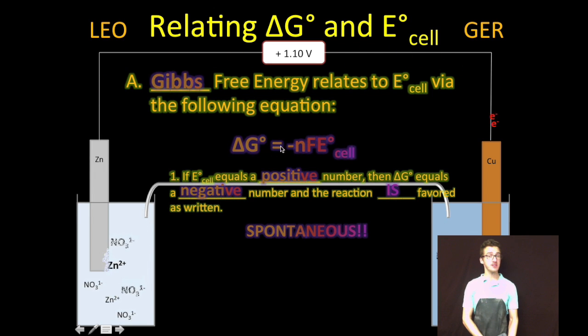As you look at this equation, Delta G equals negative nFE. Basically, if you have a positive cell potential, because you're multiplying it by this negative, you're gonna get a negative Delta G value, and that indicates thermodynamic favorability or spontaneity.